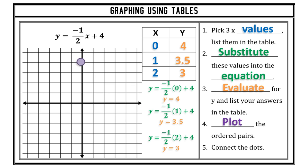I'm going to plot my three ordered pairs: (0, 4), (1, 3.5) — from the origin, one right, up three, then halfway to the next — and (2, 3) — from the origin, 2 to the right, then up 3. Last logical step: connect the dots, assuming they're correct, forming a straight line.